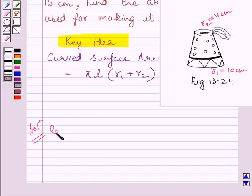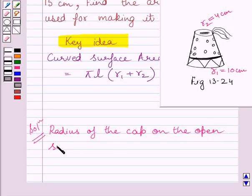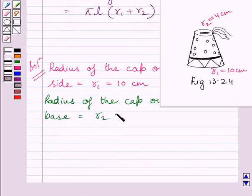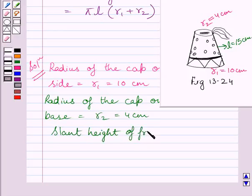So, radius of the cap on the open side: R1 = 10 cm. Radius of the cap on the upper base: R2 = 4 cm. And slant height of the frustum: L = 15 cm.